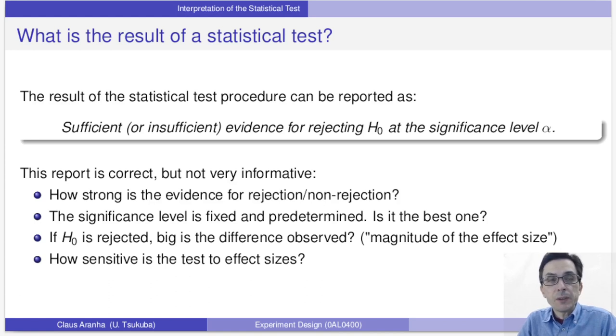There is sufficient or insufficient evidence for rejecting the null hypothesis at a significance level alpha. This description is correct but is incomplete. For example, we don't know how strong is the result found by the experiment and we don't know how big was the difference observed between the null hypothesis and what we saw in the experiment, or how sensitive was the test.